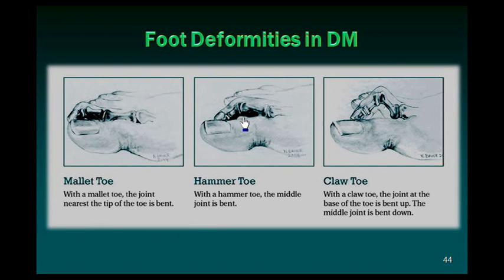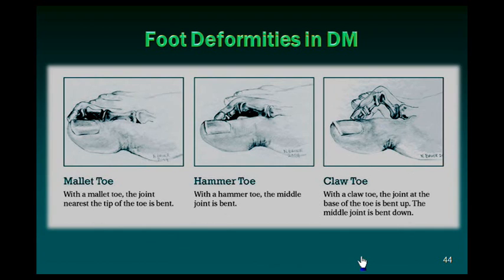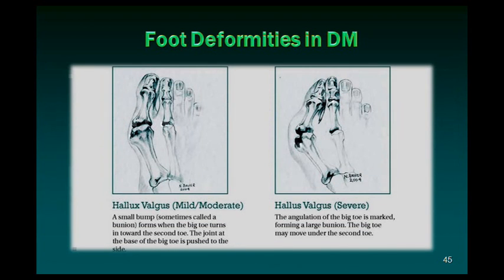So, mallet toe: the terminal joint is flexed. Hammer toe: the middle joint is flexed. Claw toe: the middle joint is flexed with extension at the metatarsophalangeal joint. These are the three types of common toe abnormalities, in addition to the two other abnormalities seen in the previous slide.